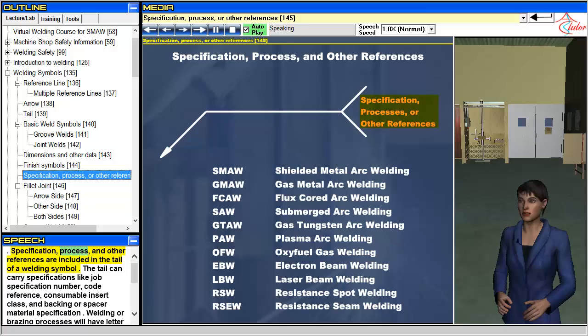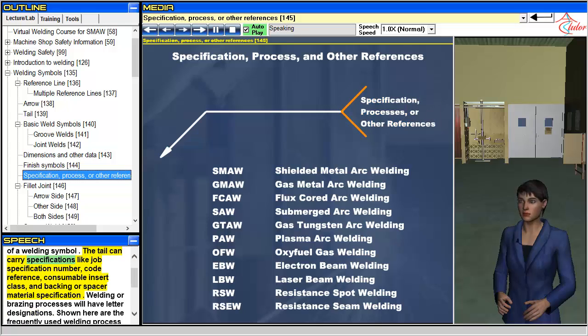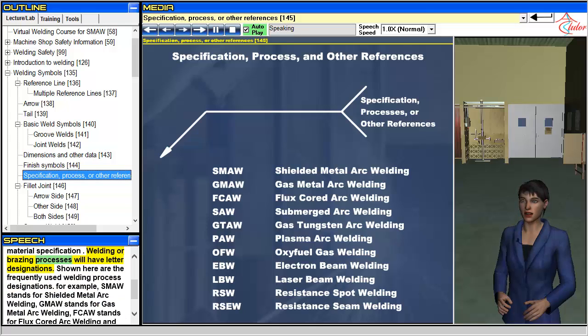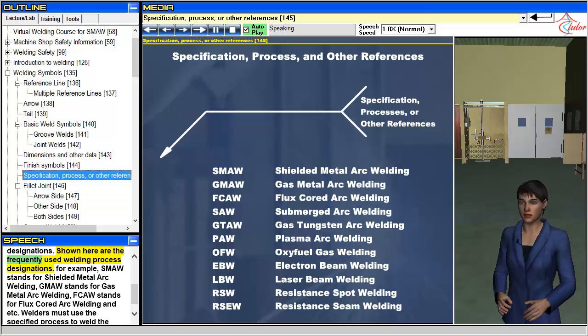Specification, process, and other references are included in the tail of a welding symbol. The tail can carry specifications like job specification number, code reference, consumable insert class, and backing or spacer material specification. Welding or brazing processes will have letter designations. Shown here are the frequently used welding process designations.